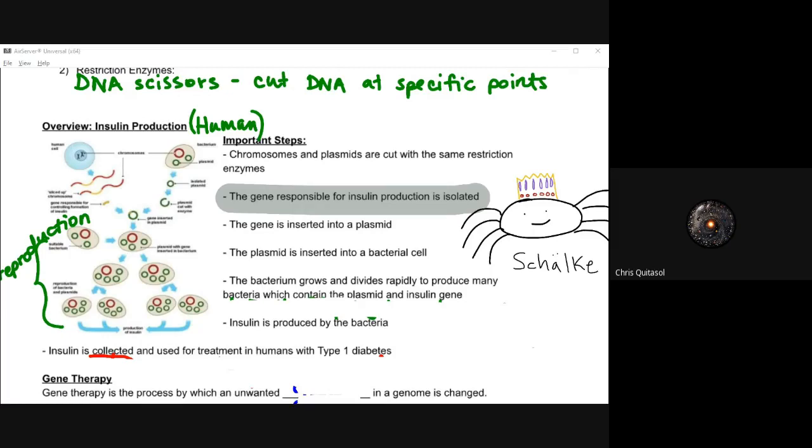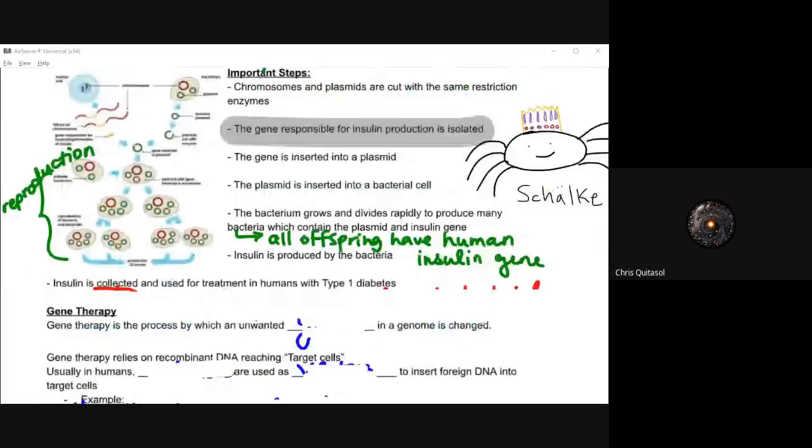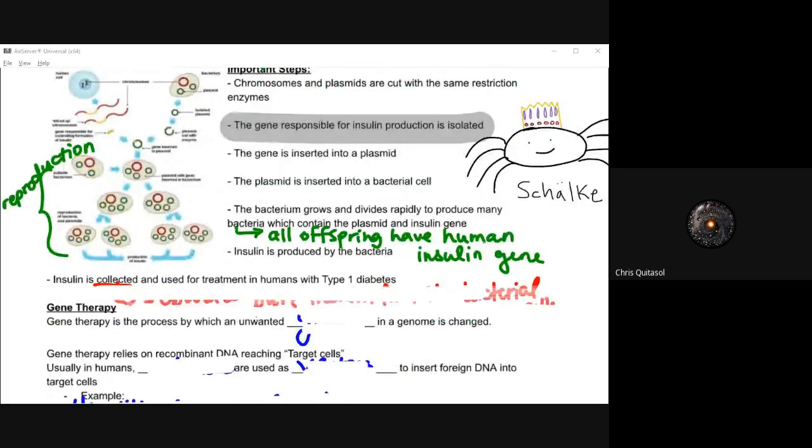That bacteria is then going to grow, divide, and produce bacteria that all have that same genome—that insulin gene. So that insulin gene, that production of insulin, will be possible by all those bacteria cells. Then as a result, those bacteria cells once they finish growing are going to produce insulin.